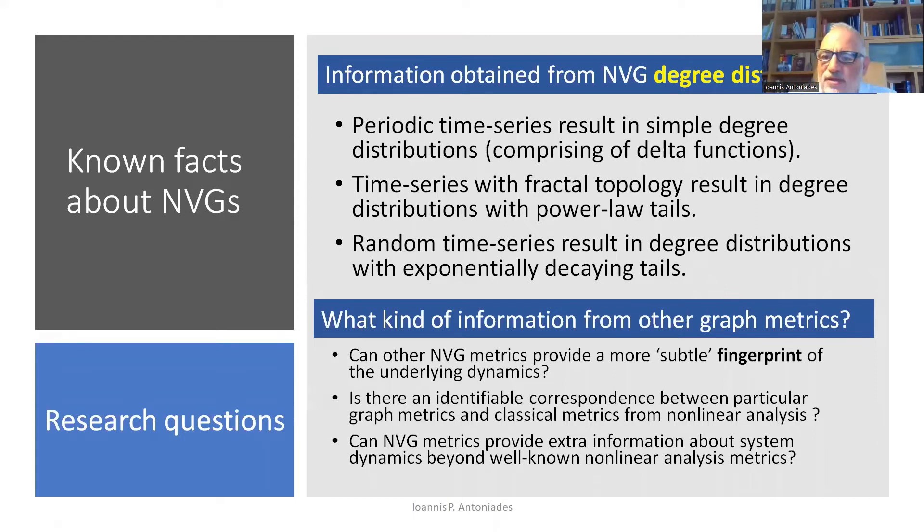But what kind of other information can you get from other graph metrics? Other graph metrics can give you a more subtle fingerprint of the underlying dynamics. But there are some other open research questions. Is there an identifiable correspondence between particular graph metrics and the classical metrics? For example, can you relate the Lyapunov exponent of the time series with some graph metric from the resulting visibility graph? This is an open question.